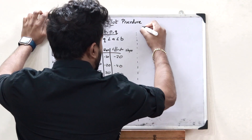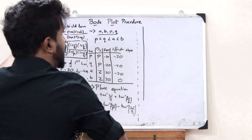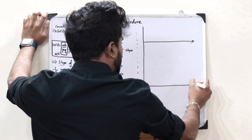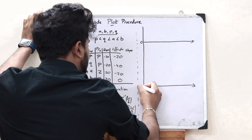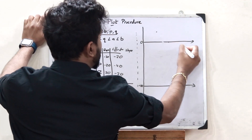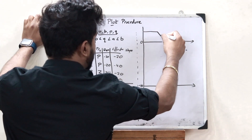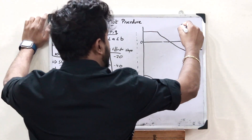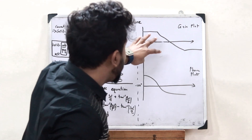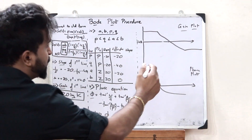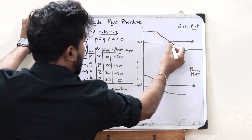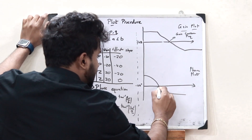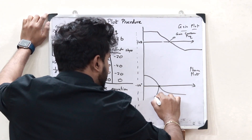Now let us take a random example of a Bode plot. A Bode plot looks somewhat like this: it has a gain plot and a phase plot. Here, the gain plot crosses the 0 dB axis — that point is the gain crossover frequency. And in the phase plot, at the point where it crosses −180°, that is the phase crossover frequency.